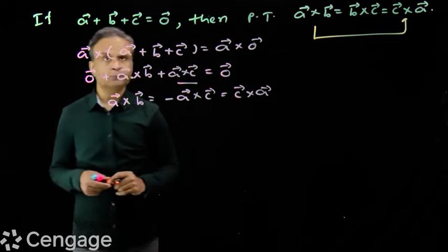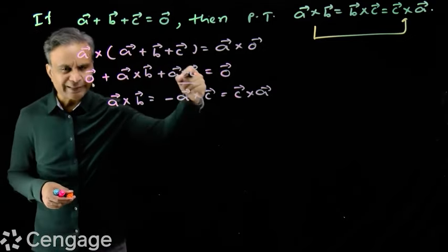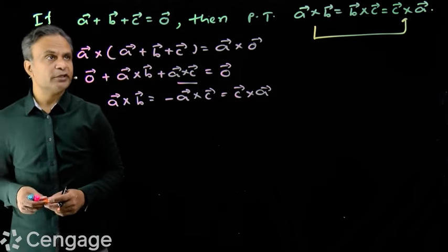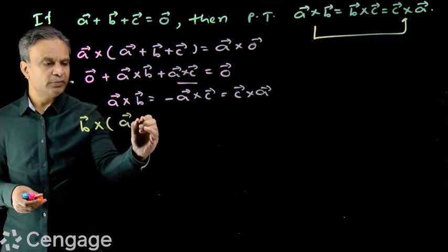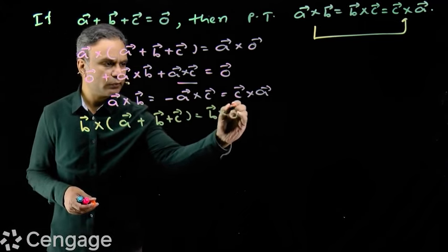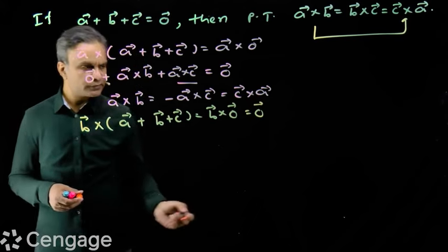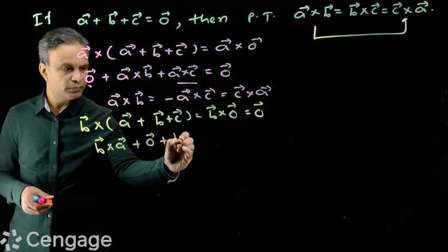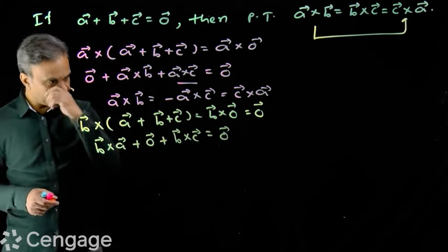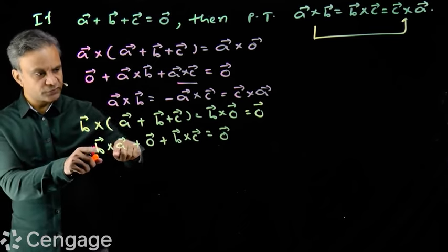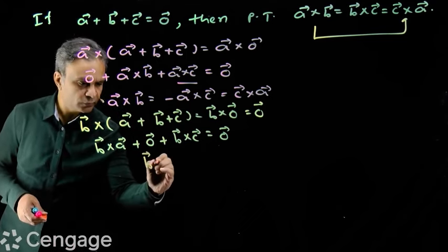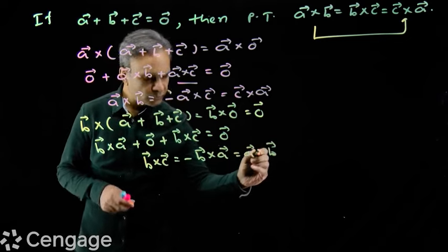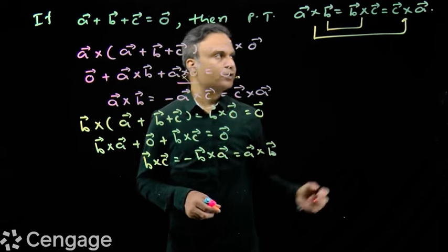Now we want the b cross c term. For that, we take cross product with vector b. We get b cross (a + b + c) = b cross null vector. Using distributive property: b cross a, plus b cross b (which is null vector), plus b cross c equals null vector. Shifting the term, b cross c equals minus b cross a, which equals a cross b. So we prove a cross b equals b cross c, meaning all three cross products are equal.